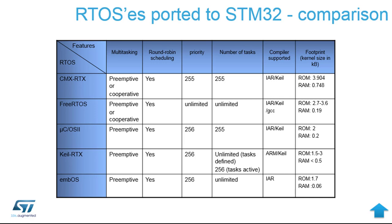Looking at others, you have the CMX kernel from the CMX company, which is a little bit bigger. You have the Keil RTX operating system implemented by Keil and supported by Keil Microvision, which is a little bit smaller and very nice. And then you have examples of other operating systems like MicroCOS 2 and MOS — all fully supported and running on STM32s.